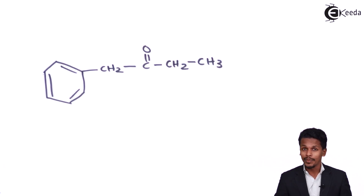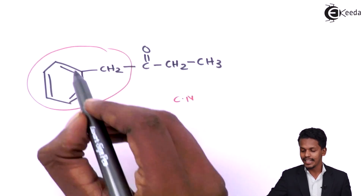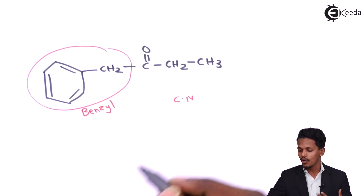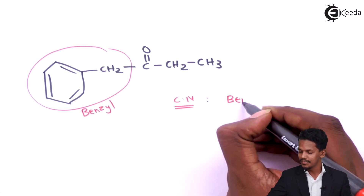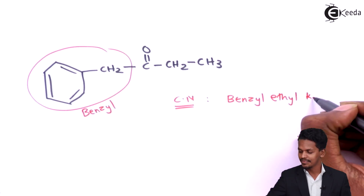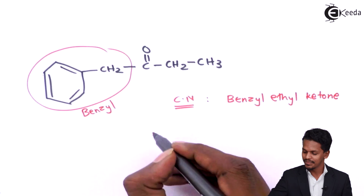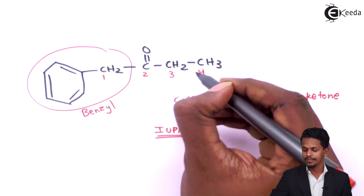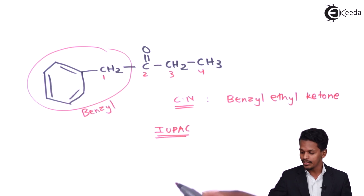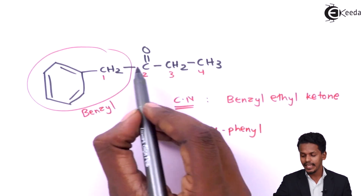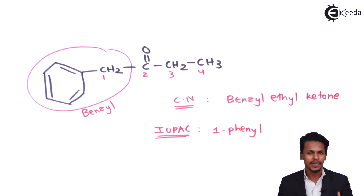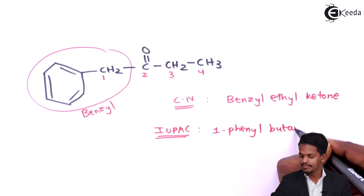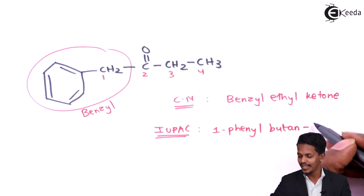The final compound has a benzene ring attached to CH2, which is known as benzyl, and an ethyl group, giving the common name benzyl ethyl ketone. For IUPAC nomenclature, we number the chain: 1, 2, 3, 4. A phenyl group is attached to carbon 1. With 4 carbons the base is butane, and the carbonyl is at carbon 2, so the IUPAC name is 1-phenylbutan-2-one.